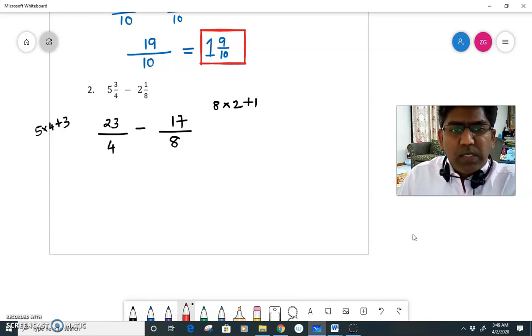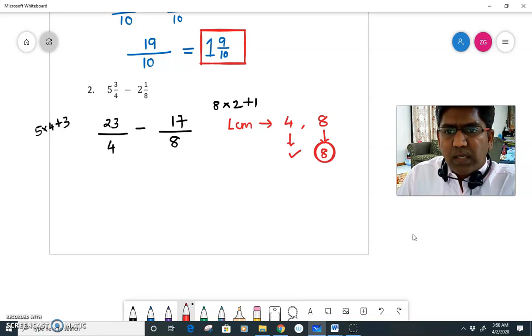Now again, the denominators are not same. It means they are unlike fractions. So we need to find the LCM of 4 and 8. So always start with the multiple of the big number. 8 times 1 is 8. Is 8 a multiple of 4? Yes. So my LCM is 8.